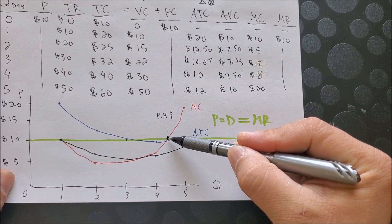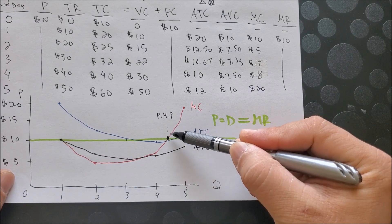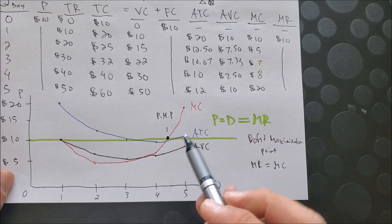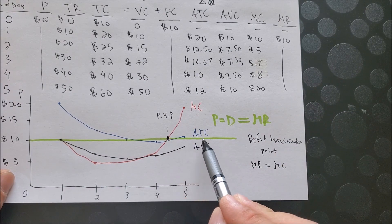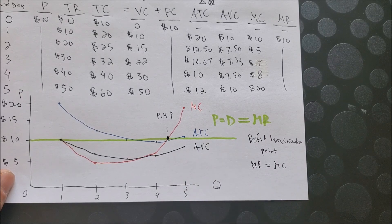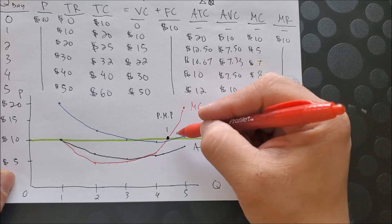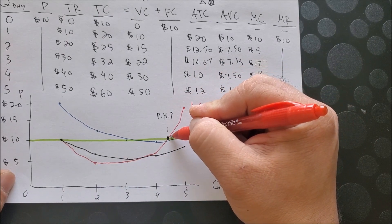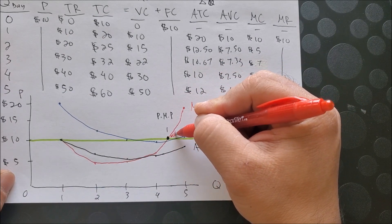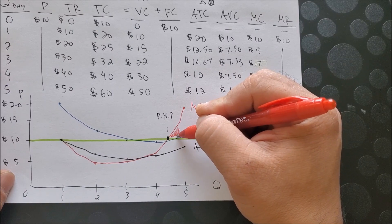Which simply says that it wouldn't make sense to wash vehicles beyond this point. Because now you see that the marginal cost exceeds marginal revenue.